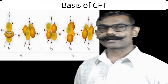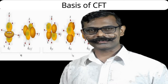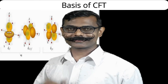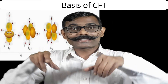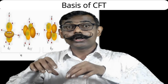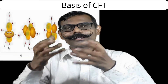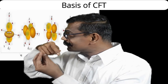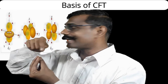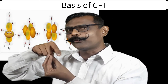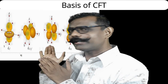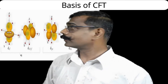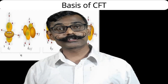Here the five d orbitals are represented one by one. The dz² orbital has its lobe along the z axis, and there is a ring-like structure around it — like the ring on Saturn, or a donut, or a medu vada. That ring kind of structure is around the z axis, with partial orientation towards x and y, and major orientation towards z axis.